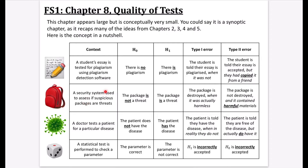We've got a similar pattern here: a security system is used to assess if suspicious packages are threats. The null hypothesis is not a threat; the alternative is that it is a threat. The type 1 error is where you reject the null hypothesis even though it was actually true — the package is destroyed, but in reality it was harmless, just containing books or similar. The type 2 error is where the package is not destroyed — the null hypothesis was accepted, thinking it was not a threat, but it actually contained harmful materials. You can see that if a test has a large chance of a type 2 error, this could be really dangerous.